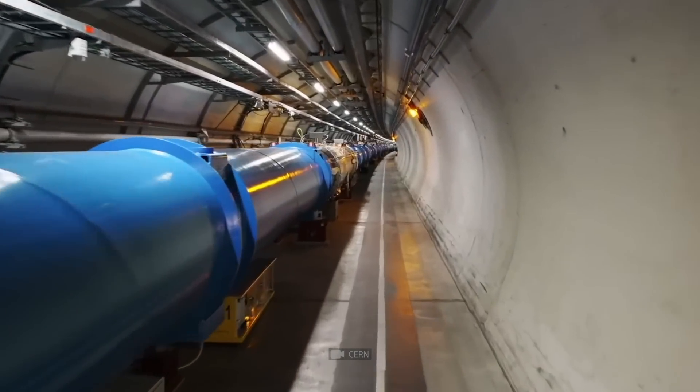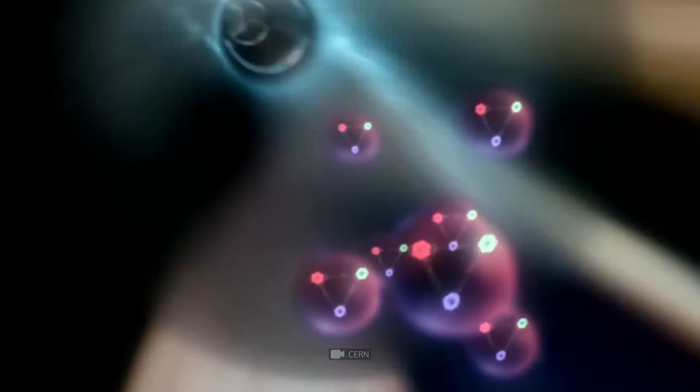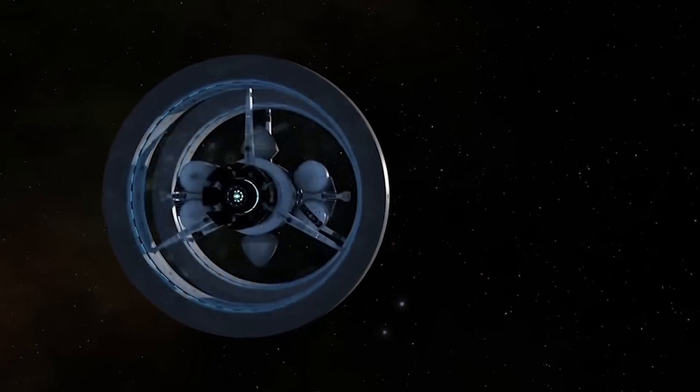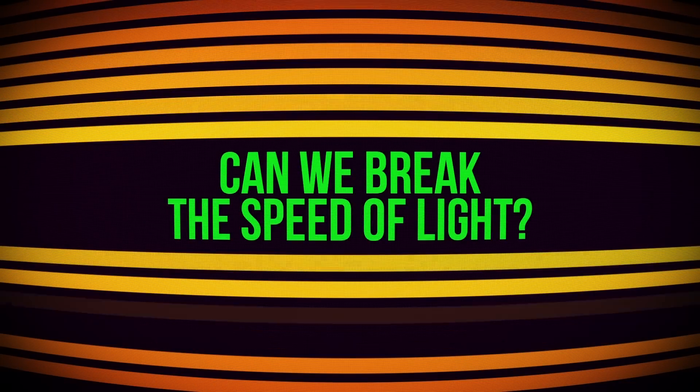And given all the scientific progress that we've achieved, why can't we just do the same? In this video, you'll find out why it's incredibly hard to catch up with a photon in the literal sense, how we can make a spacecraft travel faster than light, and can we eventually break this constant?